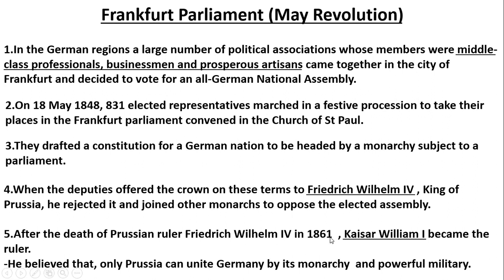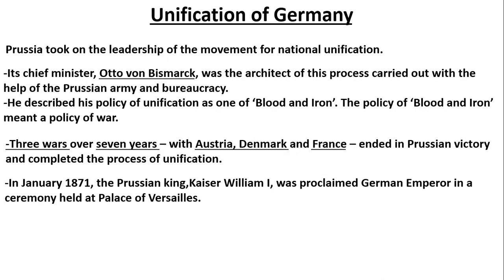In 1861, Frederick Wilhelm IV died. After his death, Kaiser Wilhelm I became the king of Prussia. Prussia could unite its monarchy and military power. In Germany's unification process, we see that Prussia took the responsibility of the German unification movement. Its chief minister, Otto von Bismarck, with the help of the Prussian army and officers, drove this procedure forward.